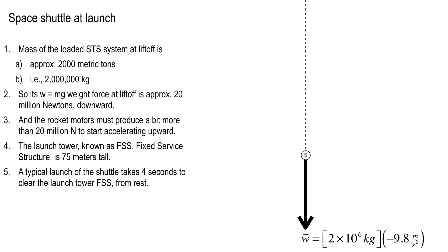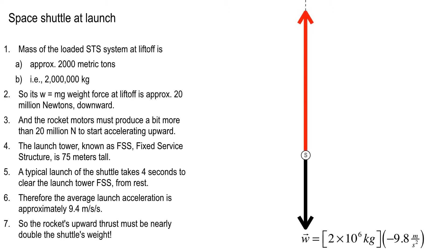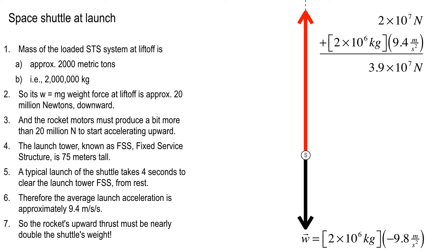Looking at shuttle launches on YouTube, it takes the shuttle about four seconds from liftoff to clear that 75-meter launch tower, starting from rest. That lets you use x = ½at² to figure out the acceleration. The average launch acceleration works out to approximately 9.4 meters per second squared. From that, you can figure out the upward thrust needed: about 20 million newtons to cancel the weight force, plus the MA of upward acceleration, giving roughly 40 million newtons of thrust.